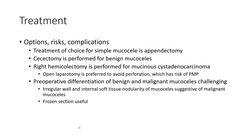Regarding treatment options and risk of complications: treatment of choice for symptomatic mucocele is appendectomy. Right hemicolectomy is performed for malignant mucocele, while chemical histology is performed for mucinous cystadenocarcinoma. Preoperative differentiation of benign and malignant mucocele remains challenging. Wall calcification and internal soft tissue nodularity on imaging are suggestive of malignant mucocele.